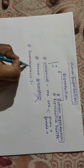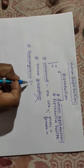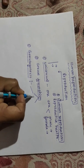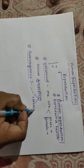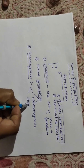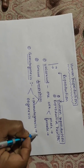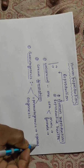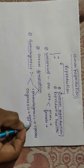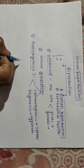Gametogenesis — from the term itself, 'genesis' means formation, and 'gameto' refers to gamete. So gametogenesis is the process of formation of gametes. Under gametogenesis, there are two processes: one is spermatogenesis and another is called oogenesis. Spermatogenesis is the process of formation of sperm, and oogenesis is the process of formation of egg cells or ova, which takes place in females. This is the first step or phase of human reproduction.